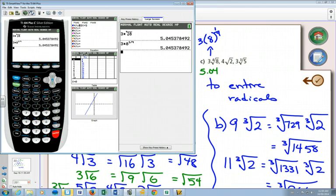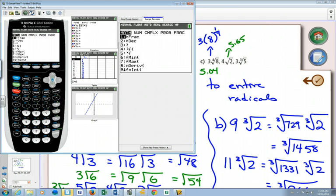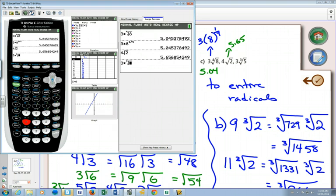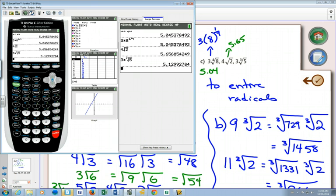4 square root of 2 is easier to put in because you've got the square root button right there. That's 5.65. And 3 cube root of 5, 3 times. Now if you go to your math button, there is a cube root one. 3 times the cube root of 5. That's 5.12. And once you've changed them to decimals, it is easier to see which one's biggest, next biggest, and so on.